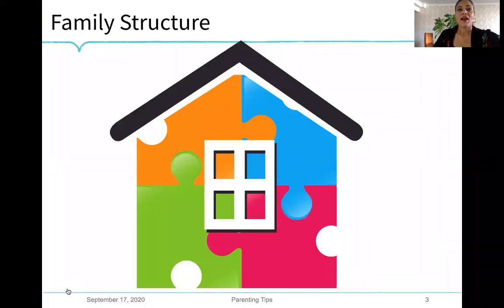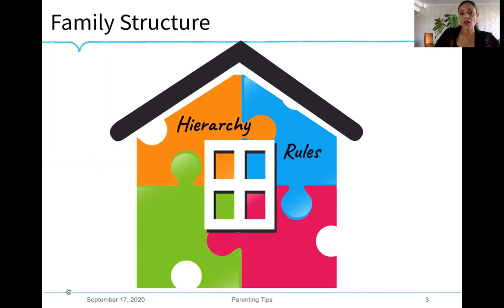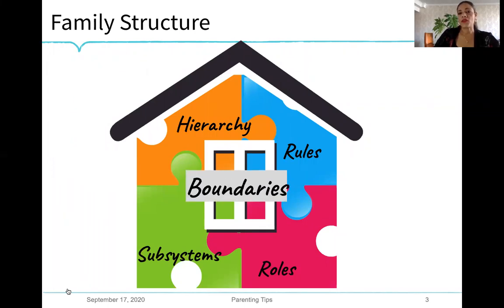Family structure is made up of a series of elements that determine the functionality or dysfunction of each family group according to their presence or absence. These elements are hierarchy, roles, rules, subsystems, and boundaries, on which we will focus today.